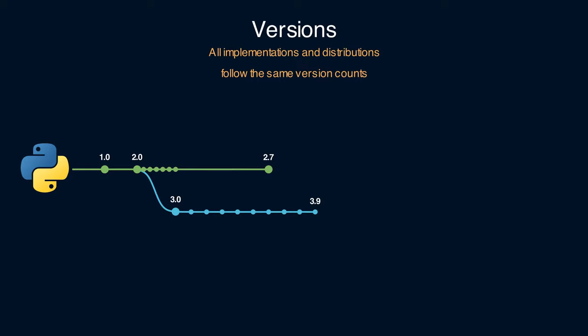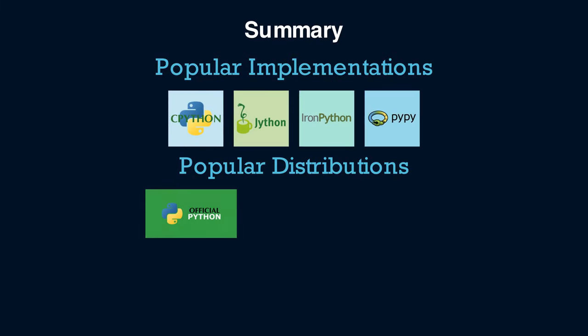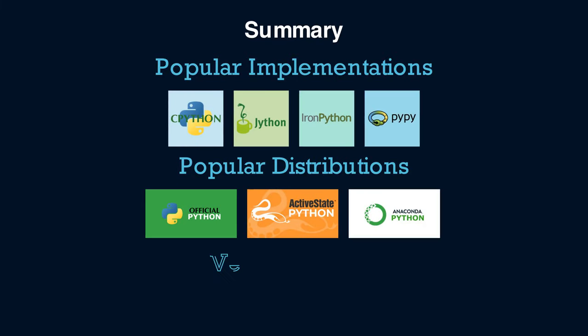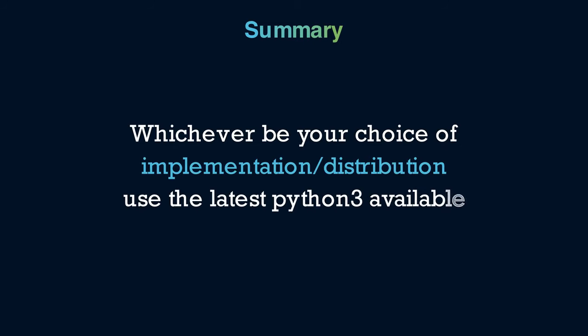Use the latest stable Python 3 version for new projects — that's 3.9 as of August 2021. We checked out some popular implementations and distributions; there are several other choices as well. Choose a distribution or implementation based on your specific requirements. If you're not sure or don't care, official Python may be the best choice. Whatever your choice, it's always good to write new programs using the latest stable versions of Python 3.